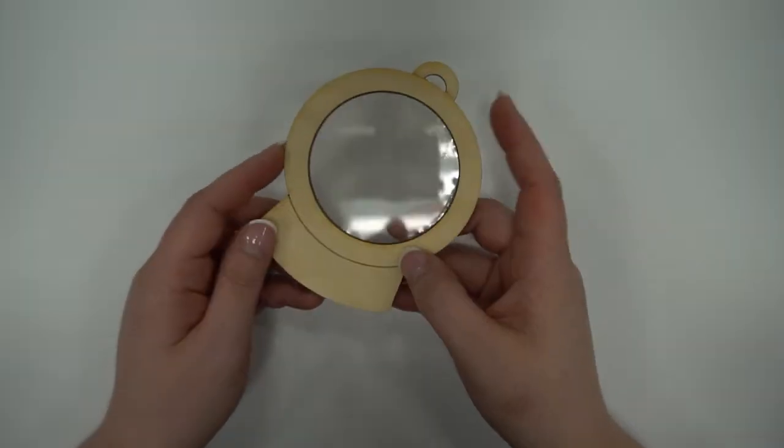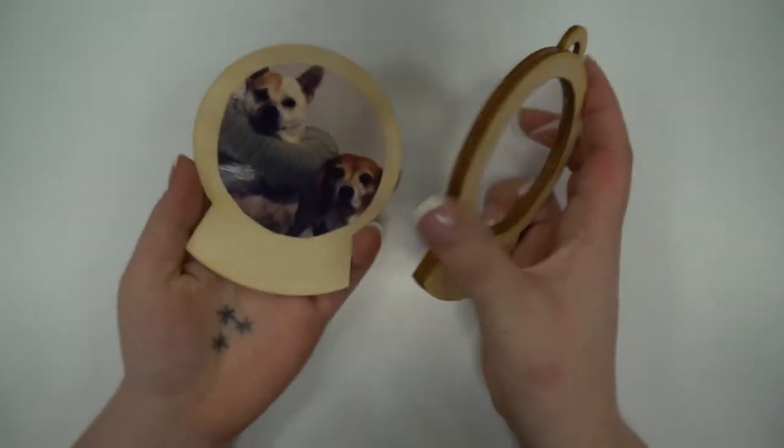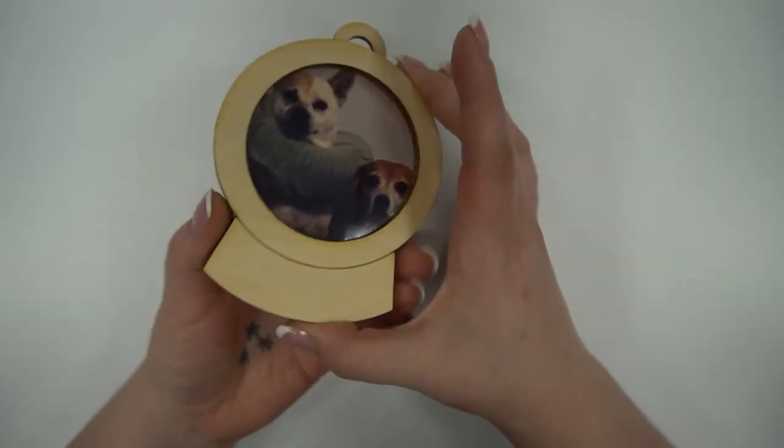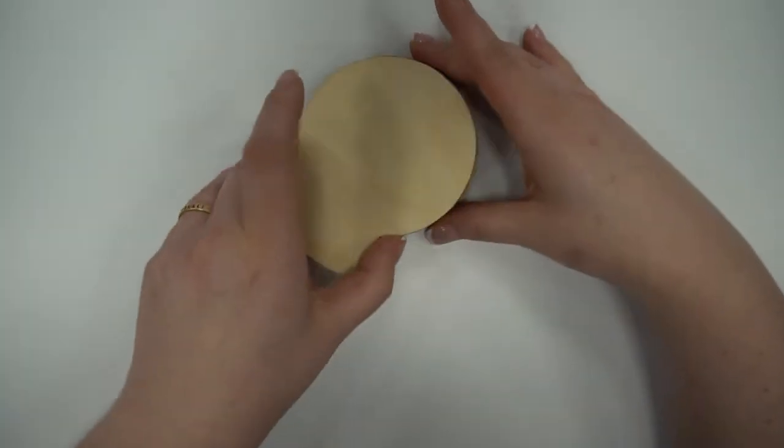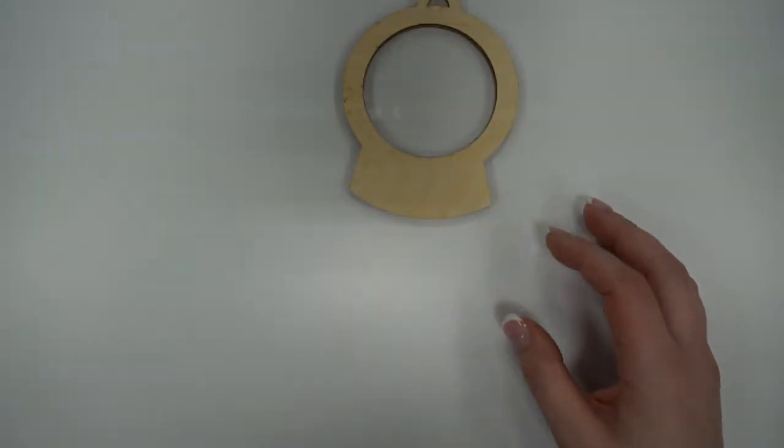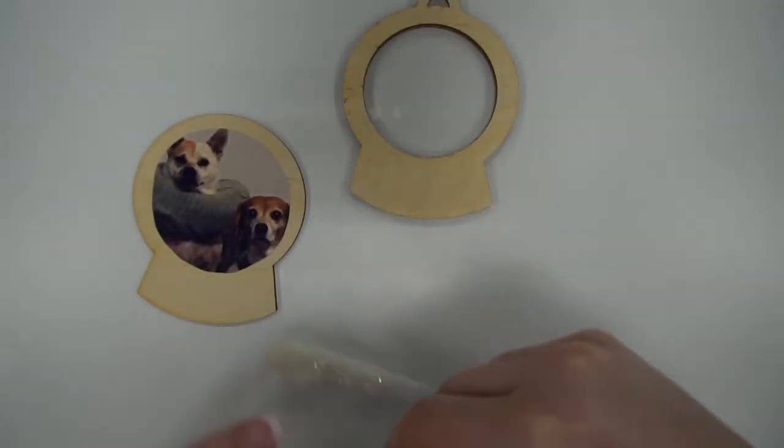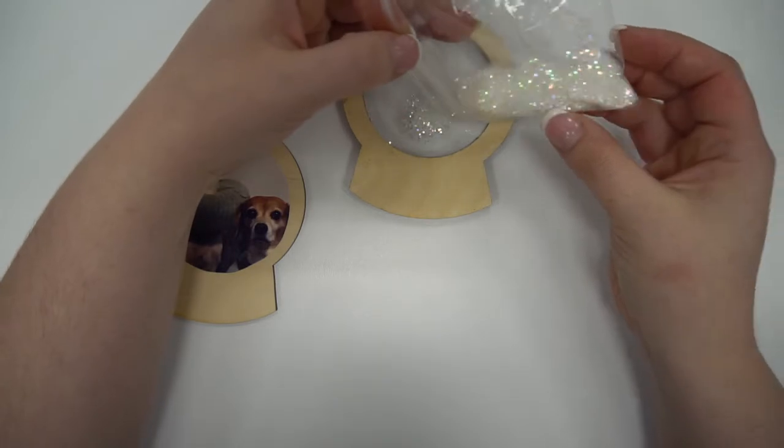All right. Once we're back here tomorrow, you can see that piece of acetate is nice and tight between those two pieces. We are going to take those two pieces we glued together and put the picture on the back. But first, we need to fill the glitter into our snow globe.